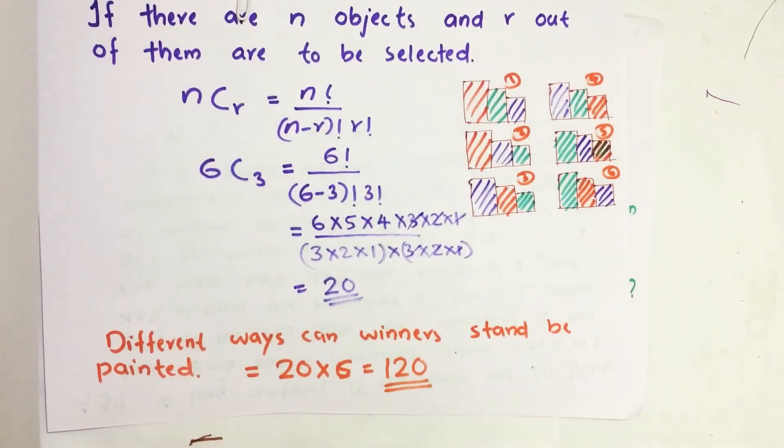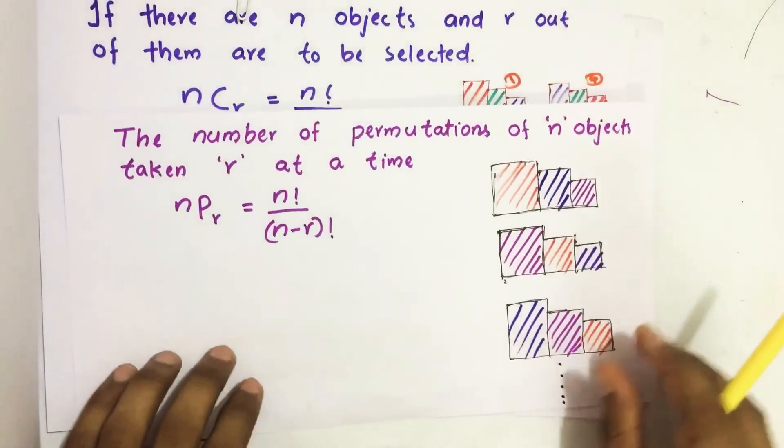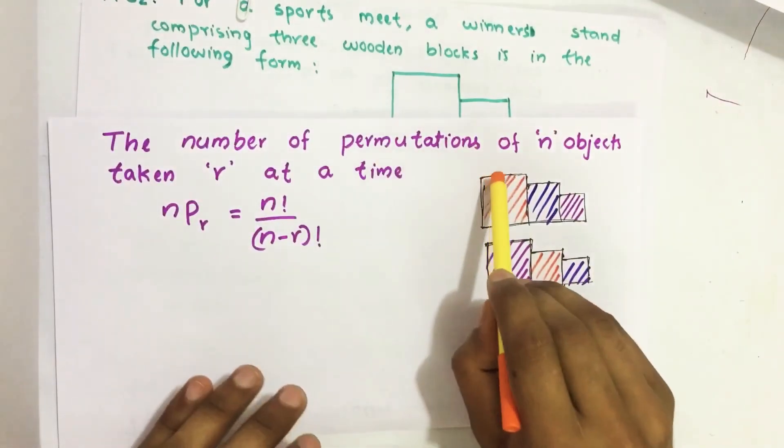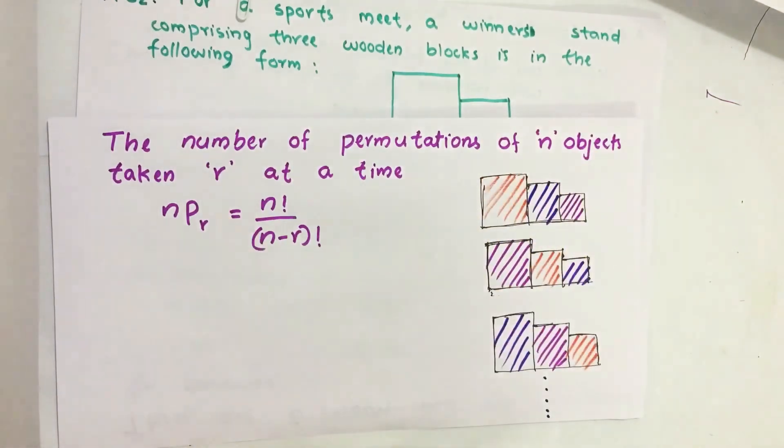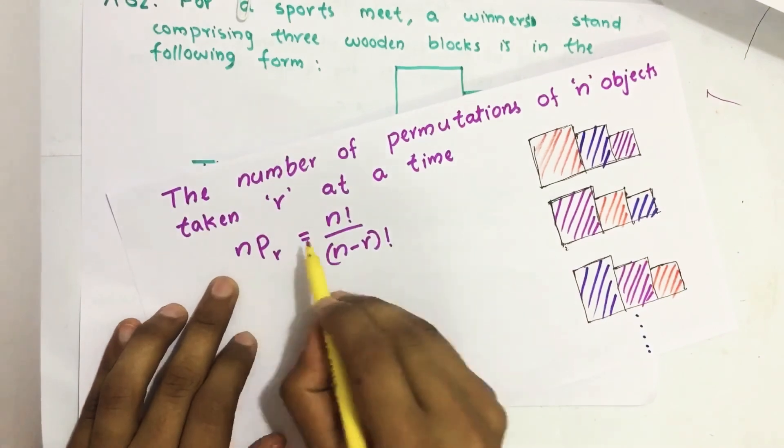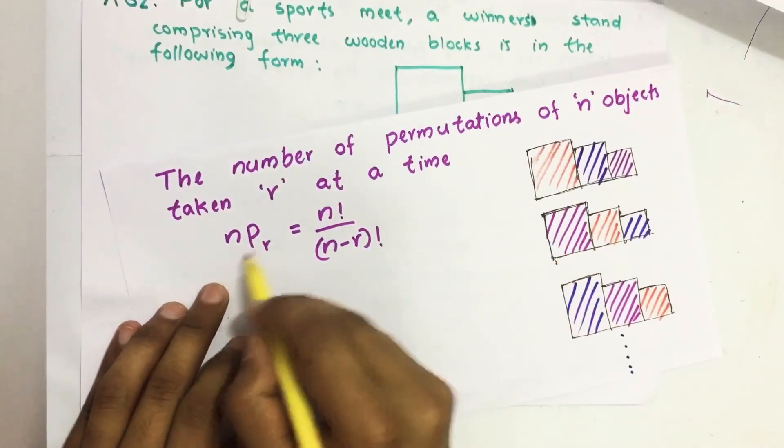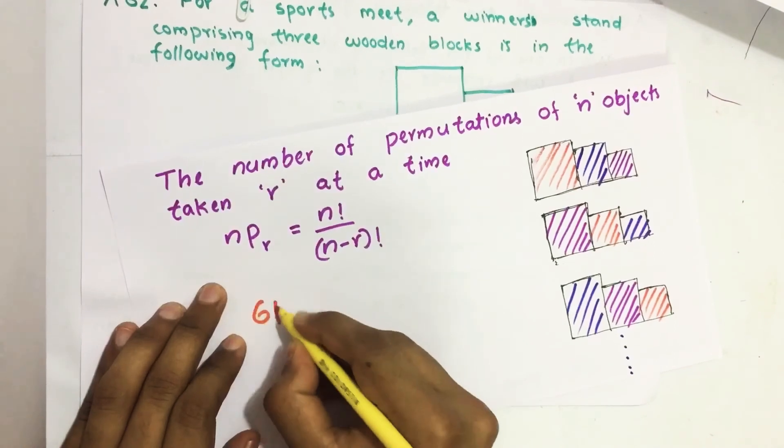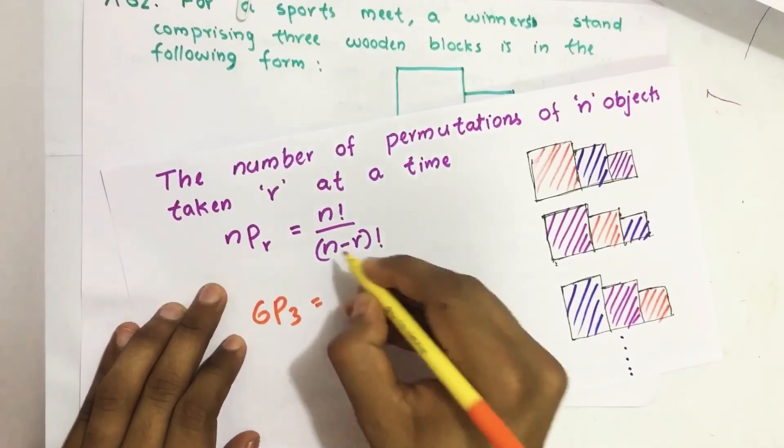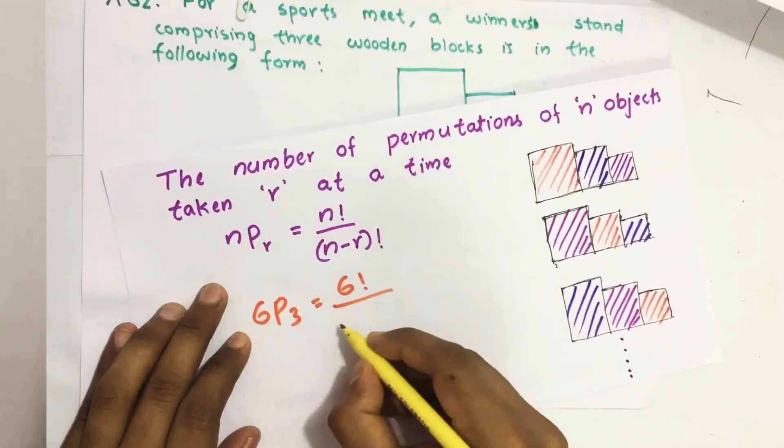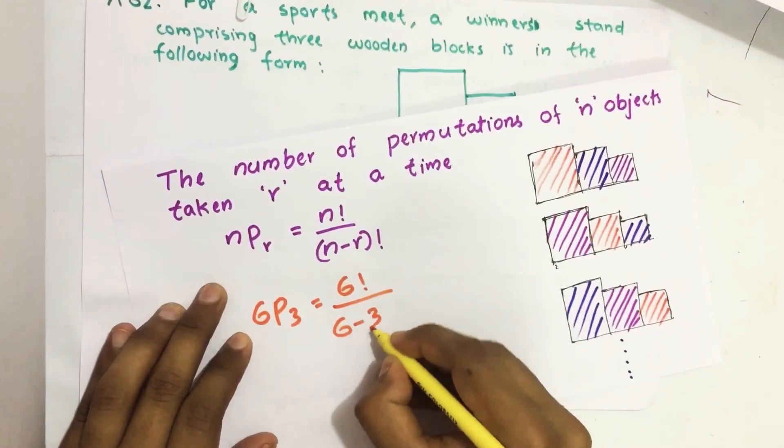Now let us see how we can solve this using permutation equation. Actually it is a permutation problem, the number of permutation of n objects taken r at a time. So how we solve here, number of permutation possible is nPr. Here it is 6P3 which equals 6 factorial divided by (6 minus 3) factorial.